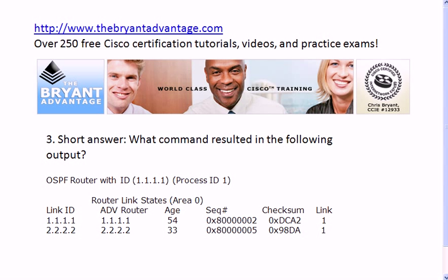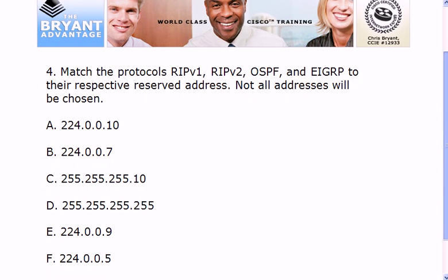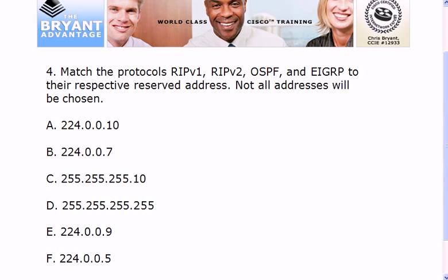The command that resulted in that output — this is how you look at the OSPF database — is 'show ip ospf database.' Not one you use every day, but good to know. For question four, scrolling down to see all the addresses: RIP version 1 uses a broadcast, the all-255s address. RIP version 2 uses 224.0.0.9. EIGRP uses 224.0.0.10. And OSPF uses 224.0.0.5.